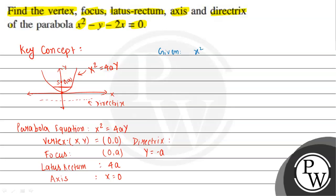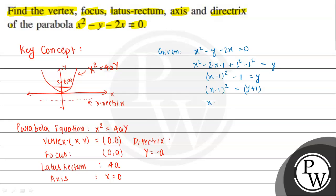The given equation is x squared minus 2x minus 4y equal to 0. We rearrange by completing the square: x squared minus 2 times x times 1, then adding and subtracting 1, giving us x minus 1 whole square minus 1 equal to 4y, which simplifies to x minus 1 whole square equal to y plus 1.